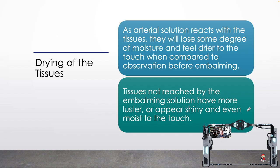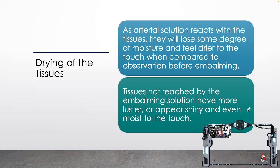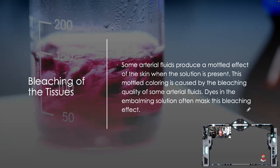Rigor mortis can easily be mistaken for firming of the tissues by the arterial solution. It is important that in making the pre-embalming analysis the presence of rigor be noted. Firming, although not a foolproof sign, is nevertheless an indicator that embalmers rely upon as a sign of arterial distribution. Different embalming chemicals can also affect the degree and speed of tissue firming. If you're using a very slow-firming chemical, you should not expect firming to be a reliable indicator immediately during or after injection. Drying of tissues is probably the least reliable of the indicators — when you've done this long enough you can assess dryness, but as an apprentice it is much harder to judge correctly.